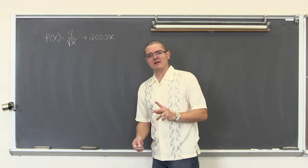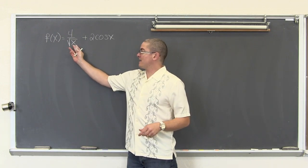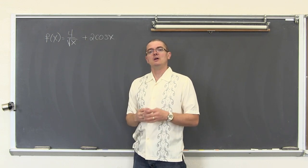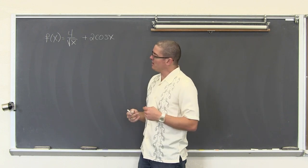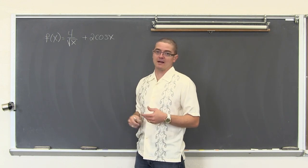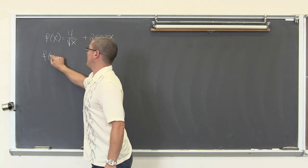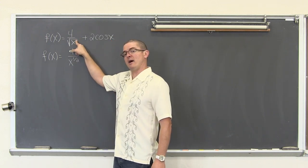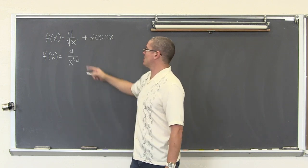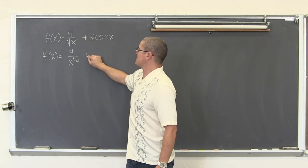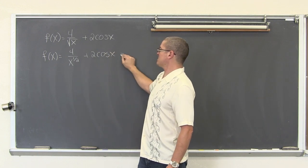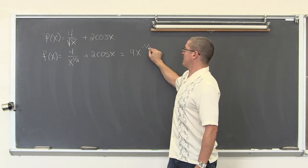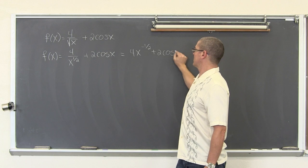This third example is really much harder than my last one. I have x underneath a radical sign — just to make sure you remember how to go from radical form into fractional exponent form. We don't really want to work with radicals. So f(x) equals four over x to the one half power, with the index set at two, plus two cosine of x. Letting that base float up gives us four times x to the negative one half power plus two cosine of x.